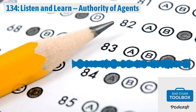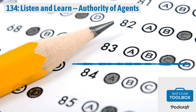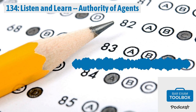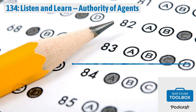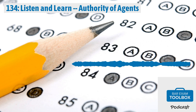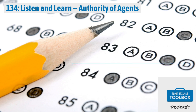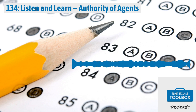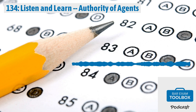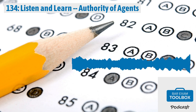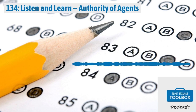Let's look at each of these elements more closely. What does it mean for a principal to hold out another as having authority? Note that what we care about here is the principal's actions, not the agent's. In other words, the principal must give a third party reason to believe that the agent has actual authority. But that's not enough by itself to create apparent authority. The third party also must reasonably rely on that authority. That means that apparent authority is not applicable if the third party has actual knowledge that the agent did not have authority.